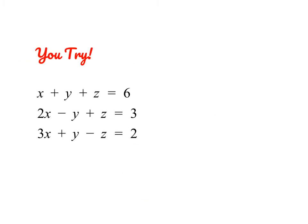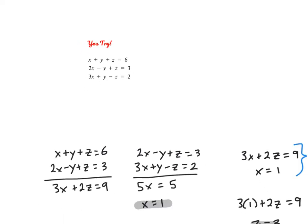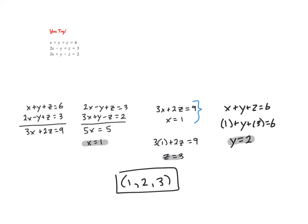Alright, so go ahead and pause the video and give this problem a try. Okay, so you might have chosen a different path than I did, but you should still end up with the same answer of 1, 2, 3. So you can see here that I chose to eliminate my y's. And this actually worked out really nicely because when I eliminated my y's using the second and third equation, both y and z canceled out, which made my job a little bit easier. So here's my system of two variables. And then I was able to substitute and solve.